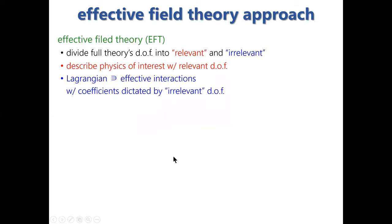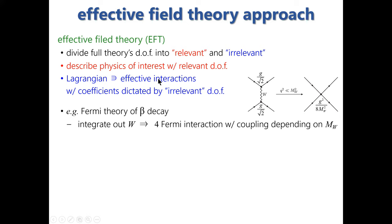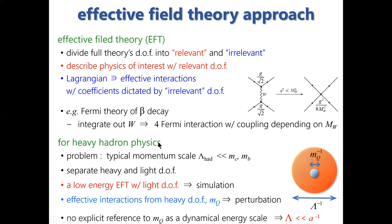Let us move on to the effective field theory approach. In EFT, we divide the full theory's degrees of freedom into relevant and irrelevant parts and describe the physics of interest using the relevant degrees of freedom. The Lagrangian consists of effective interactions with coefficients depending on properties of the integrated-out heavy fields. For heavy hadron physics, the essential problem is that we have two largely different scales: the heavy quark mass and the typical momentum scale of the heavy hadron.